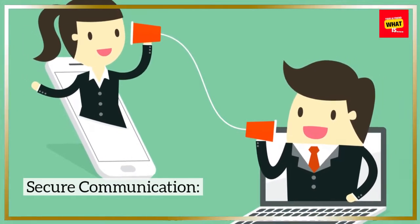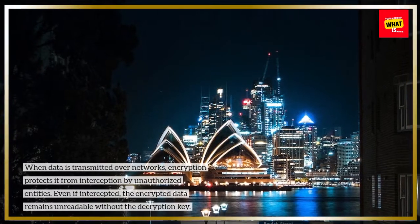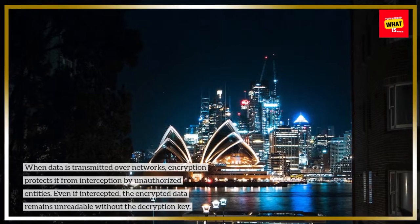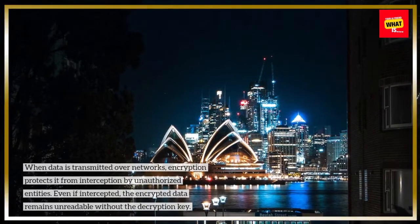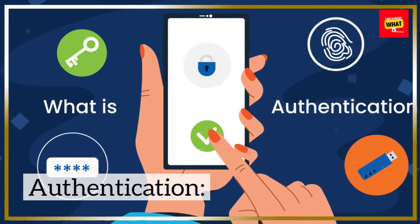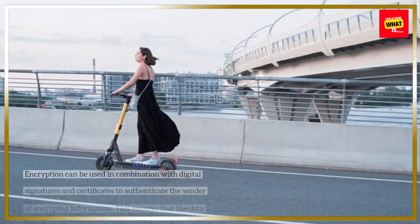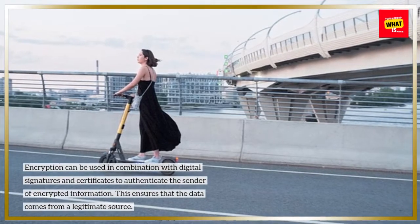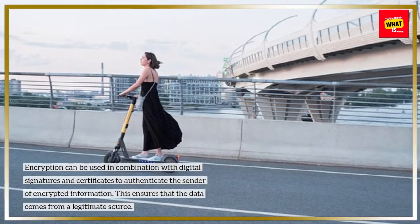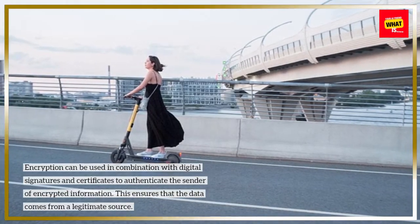Secure communication: When data is transmitted over networks, encryption protects it from interception by unauthorized entities. Even if intercepted, the encrypted data remains unreadable without the decryption key. Encryption can also be used in combination with digital signatures and certificates to authenticate the sender of encrypted information, ensuring that the data comes from a legitimate source.